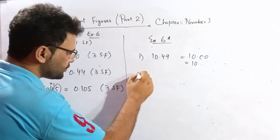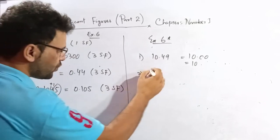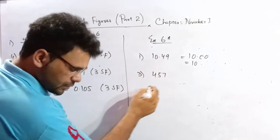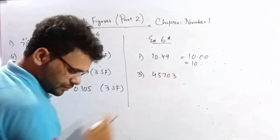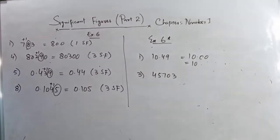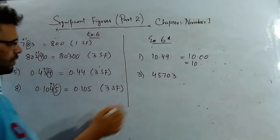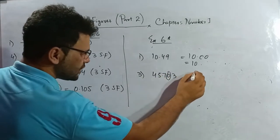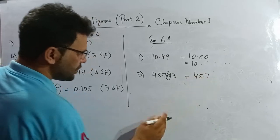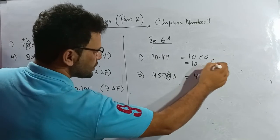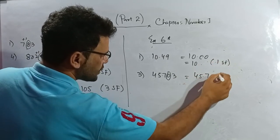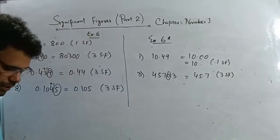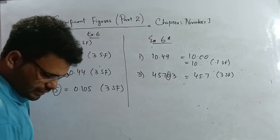Question number 3: 45.703, write correct to two or three significant figures. I check the fourth significant figure — it is less than five, so the answer is 45.7, correct to three SF.